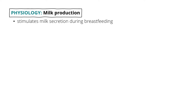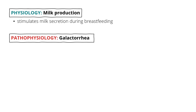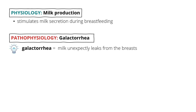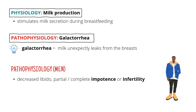During breastfeeding, sensory receptors in the nipple get stimulated, and this causes more prolactin to be secreted. If we have so much prolactin already, we don't have to wait for the nipples to be stimulated, and what can happen is galactorrhea — milk unexpectedly leaking from the breasts. In men, prolactin causes decreased libido and also partial or even complete impotence or infertility. This is more tricky because we don't yet understand all the effects prolactin has on men, but it seems it could play a role in testosterone secretion and spermatogenesis.